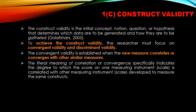Construct validity is the initial concept, notion, question, or hypothesis that determines which data are to be generated and how they are to be gathered — as defined by Goliath Shani in 2003. To achieve construct validity, the researcher must focus on convergent validity and discriminant validity, which we will discuss in the forthcoming slides.